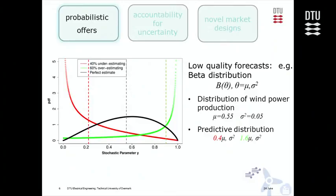We introduce some low quality where we have overestimation of the mean - the green line signifying 60% overestimation - and underestimation 40% below. These red and green distributions are the same as the black distribution, only with a difference in their mean.